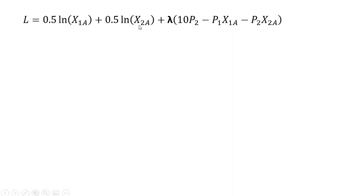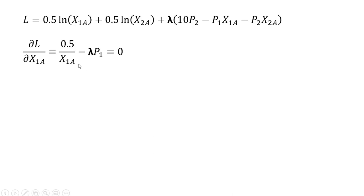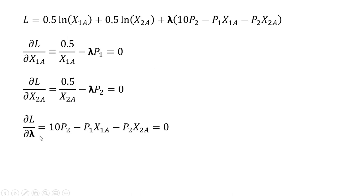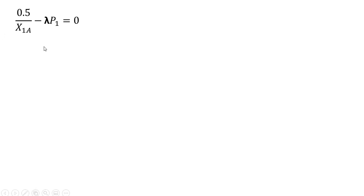Now we're going to maximize utility subject to the constraint. Here is our objective function — expected utility — and here is our constraint. We're going to take a partial derivative of the Lagrangian with respect to good x in state 1, all for consumer A, and we get back the following result. Taking a partial derivative with respect to good x in state 2, we get this result. We're going to solve that first partial derivative result for lambda and get the following.